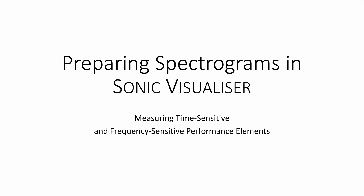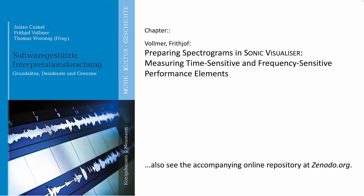Welcome to a short video tutorial on setting the spectrogram layer in Sonic Visualizer properly for measuring various elements of musical performances. This tutorial is part of a set of introductions to the methods of software-based musicological performance research, and to Sonic Visualizer in particular. You may find the associated chapter as part of the book Softwaregestützte Interpretationsforschung, containing further thoughts and some more detailed discussions.